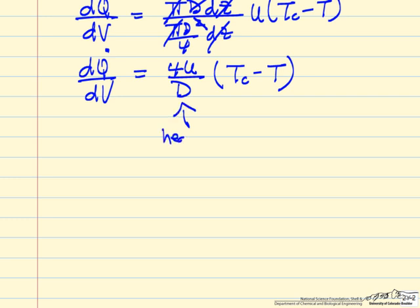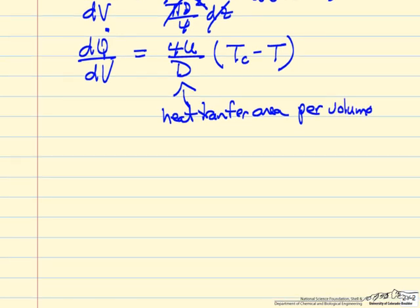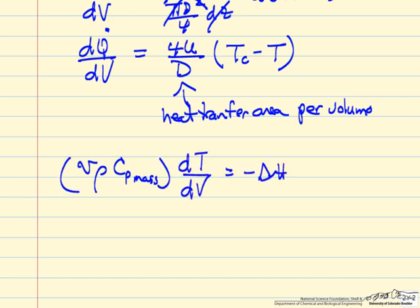Now sometimes we'll end up writing energy balance in terms of mass heat capacities, and a volumetric flow rate times the density is a mass flow rate, and then the mass heat capacity on the left side and the right side is the same form as here, 4U over d, tc minus T.